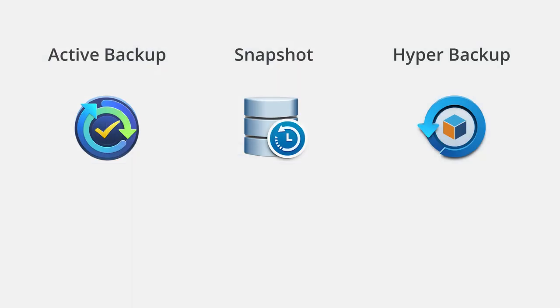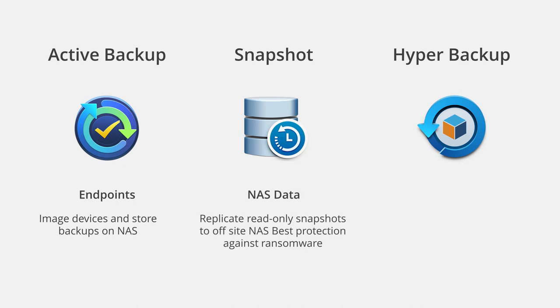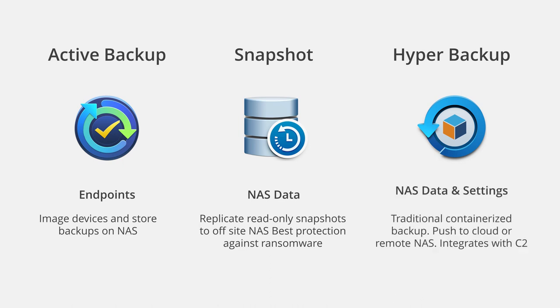Let's review the different applications in DSM that you can use to protect your data. Active Backup for Business is Synology's license-free backup software that creates bare-metal image backups stored on the NAS with no license fees — providing a safe means of restoring endpoints hit by ransomware. Snapshots are read-only copies of your data that can be scheduled at periodic intervals, replicated to an off-site location, and failed over to if your primary site becomes victim to ransomware. Finally, Hyper Backup sends your data off-site — not only to a remote NAS but also to public cloud repositories including Synology's own C2 cloud storage.